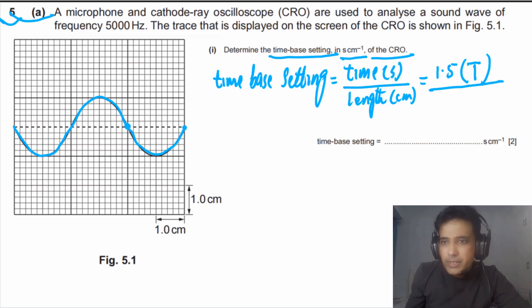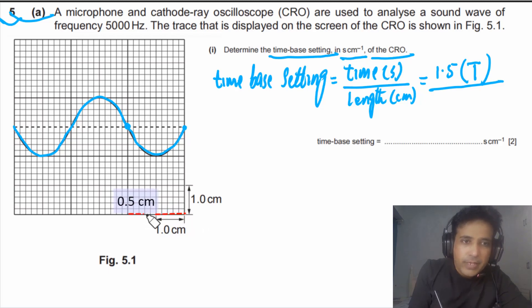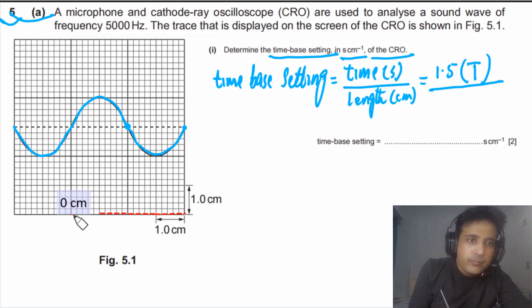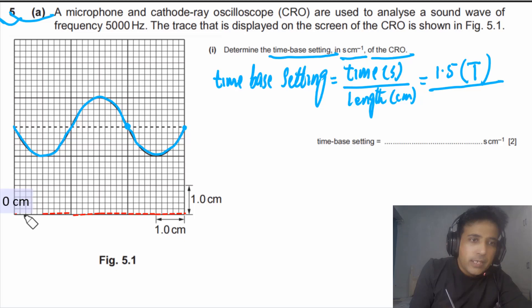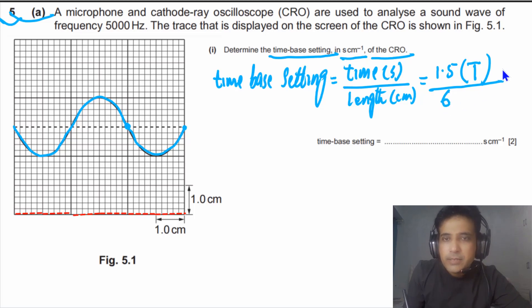Looking at the given scale, we have 1 centimeter, 2 centimeters, 3 centimeters, 4 centimeters, 5 centimeters, and 6 centimeters. So the total length of the wave on screen is 6 centimeters, and we simply need to divide by 6. Time is in seconds and length is in centimeters.